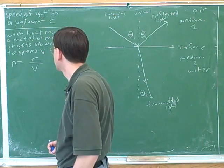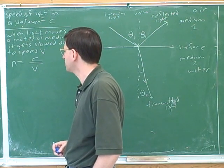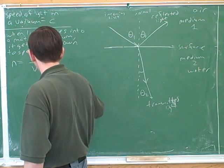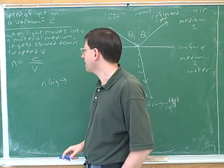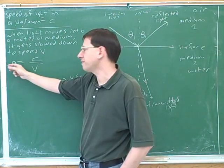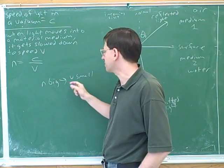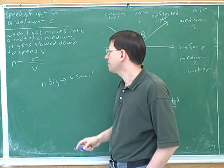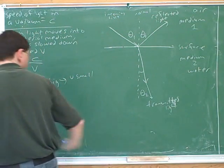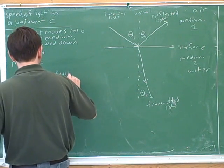So what does the index of refraction tell us? If N is big, V must be small because V is in the denominator — there's an inverse relationship between N and V. This means N tells you how much the medium has slowed the light down. The bigger N is, the more the light has been slowed. N is our index of refraction.